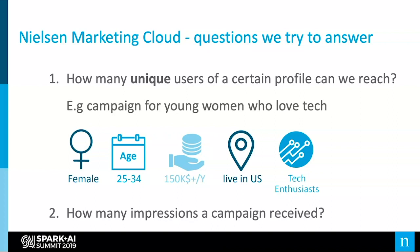The two main questions we try to answer in our SaaS offering are these. The first one is how many unique users or unique devices of a certain profile can we reach? For example, if we have a campaign of young women who love tech, our customer can choose attributes like female, given age range, given income, that live in the U.S. — this is the count distinct question. The second type of question is just a simple count question, such as how many impressions a campaign received.